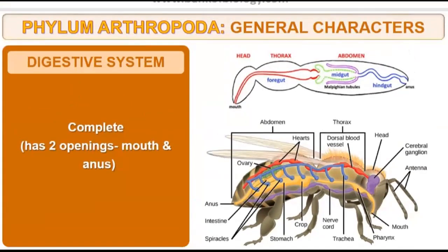The digestive system in arthropods is complete. It has two openings: one mouth and one anus. One opening is present for ingestion and the next opening is present for egestion. Thus, it has two openings and the digestive system is known to be complete.